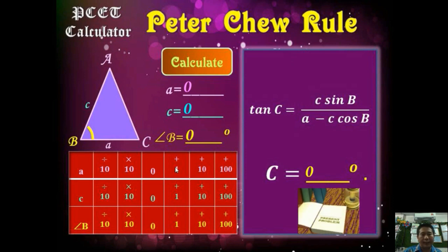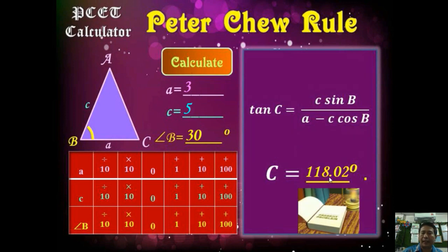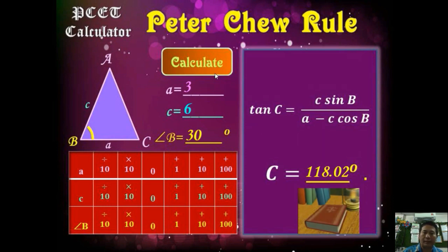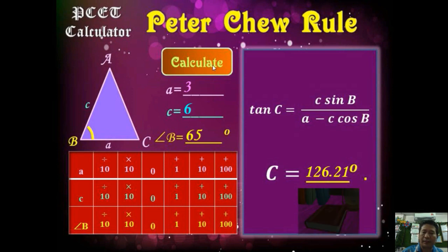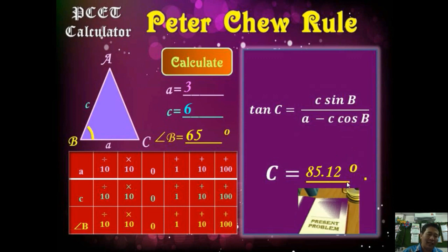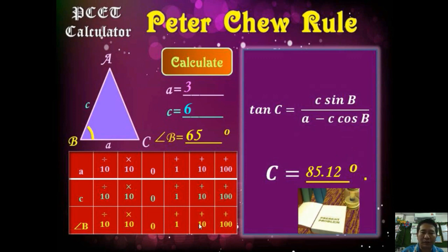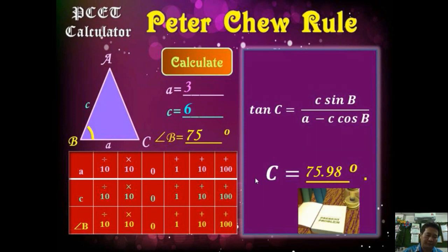Let's try some examples. We let A equal to 3, C equal to 5, and angle B equal to 30 degrees — then we press calculate and get the answer. We can change C to 6 and calculate again to get another answer. Or change angle B to 65 degrees and calculate again — it gives the answer very quickly. Changing the angle to 75 degrees also gives an answer. Changing A to 5 also gives a result.